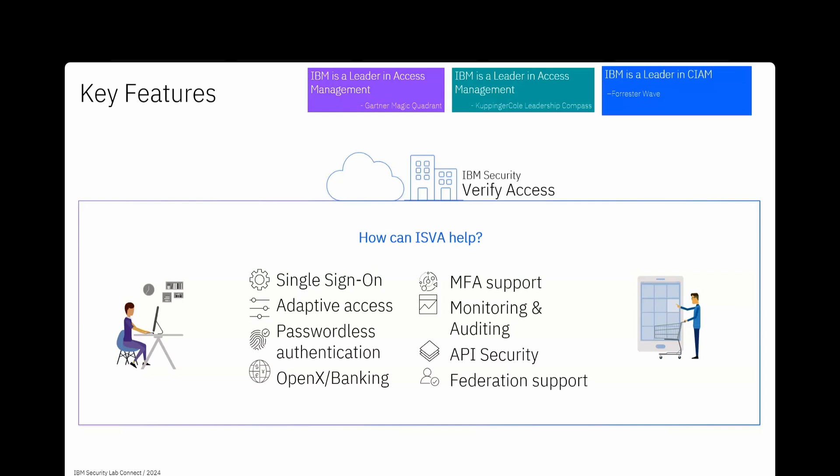MFA support for second-factor authentication is very common nowadays. There are plenty of different second-factor authentication mechanisms supported by ISVA out of the box. It also helps to have centralized monitoring and auditing so that if there is any security breach, security investigators can easily look at audit logs to find out which user logged in from which location and accessed which applications.